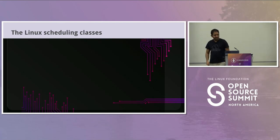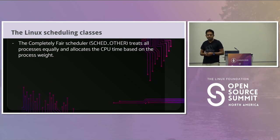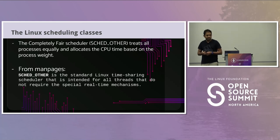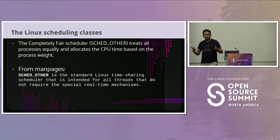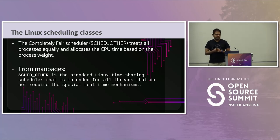We'll start with a little background on Linux scheduling classes. We have the Completely Fair Scheduler, also called the sched_other scheduling class. It treats all processes equally, more or less, and allocates CPU time based on process weight. From the man pages, sched_other is a standard Linux time-sharing scheduler intended for all threads that do not require special real-time mechanisms. It tries to treat sched_other threads fairly, but you can change the weights of threads and change the amount of CPU time — the time slice — they're given.